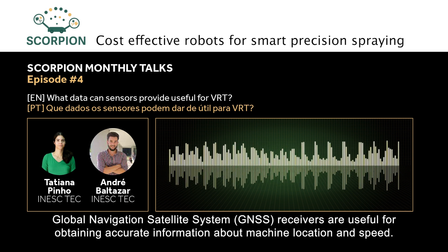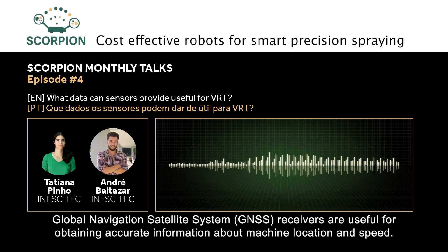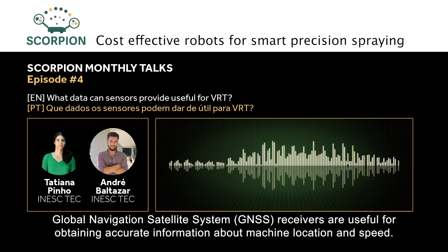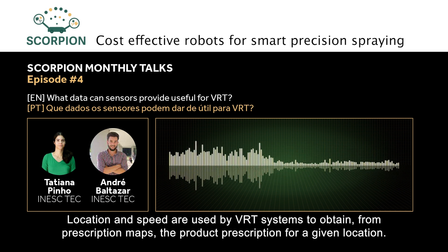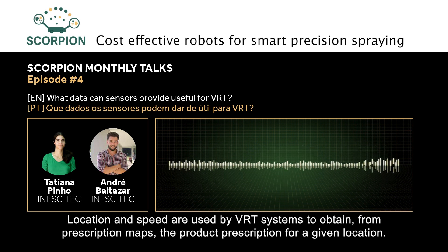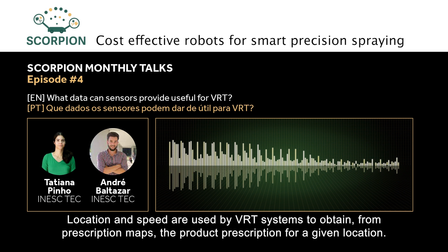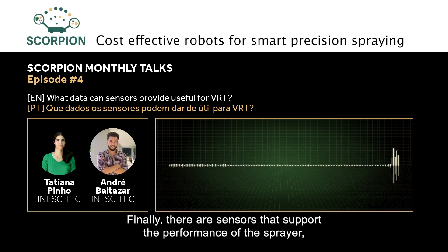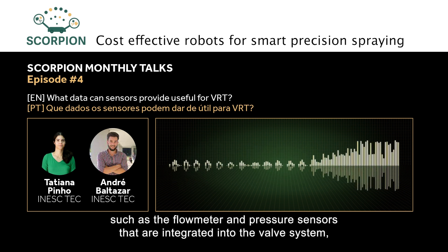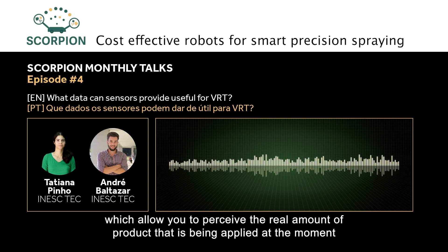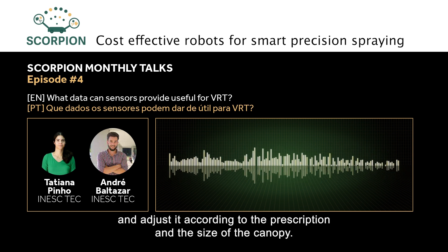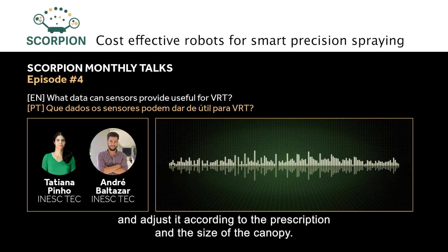Global Navigation Satellite System (GNSS) receivers are useful for obtaining precise information about the machine's location and speed. Location and speed are used by the VRT system to obtain, from prescription maps, the product prescription for a given location. Finally, there are sensors that support the operation of the sprayer, such as flow meters and pressure sensors, which are integrated into the valve system and allow monitoring of the actual quantity of product being applied at any moment, adjusting according to the prescription and canopy dimensions.